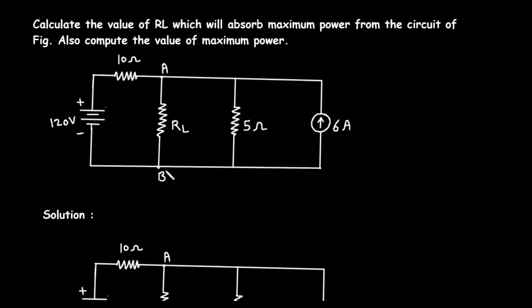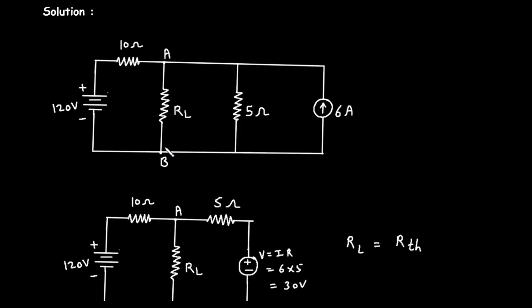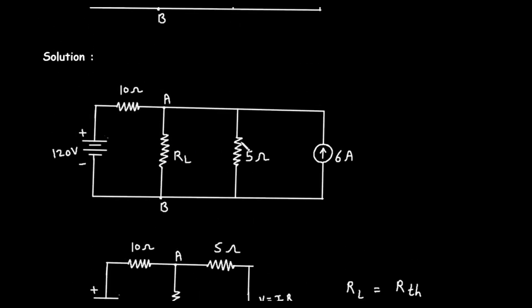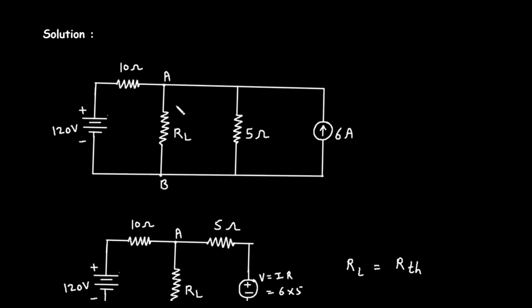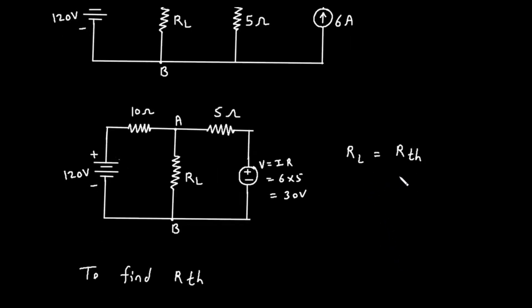To solve this, we will use Thevenin's theorem. The theorem states that any linear electrical network with two terminals can be replaced by an equivalent circuit consisting of a single voltage source, called the Thevenin voltage or VTH, in series with a single resistor, called the Thevenin resistance or RTH. According to the maximum power transfer theorem, a load resistor will receive maximum power from a source circuit when its resistance, RL, is exactly equal to the Thevenin resistance, RTH, of the source circuit.